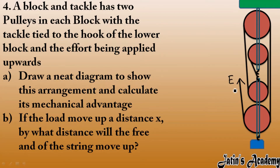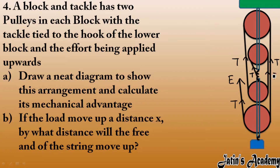The effort is applied in the upward direction. Now we trace the tension from one pulley to another: from this pulley to this pulley — one tension; then another pulley to pulley — one more tension; repeating for all pulleys. We get a total of 5 tensions. Note that the effort tension is in the downward direction in this arrangement.